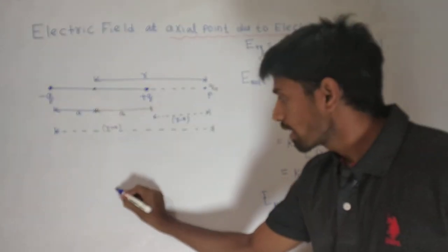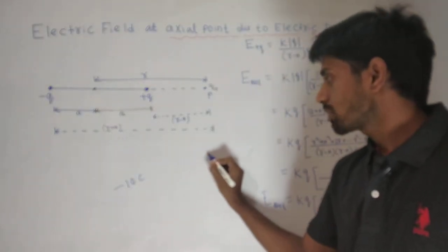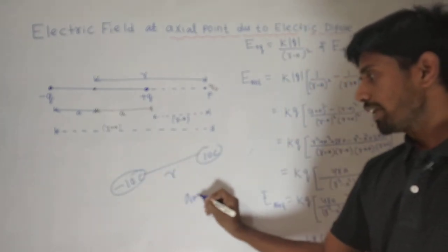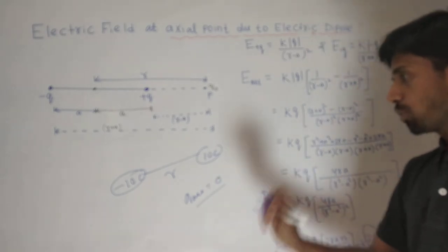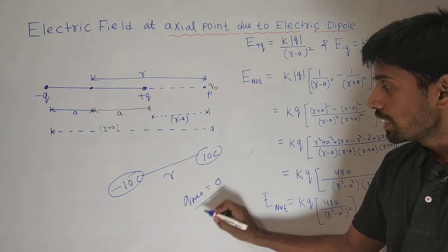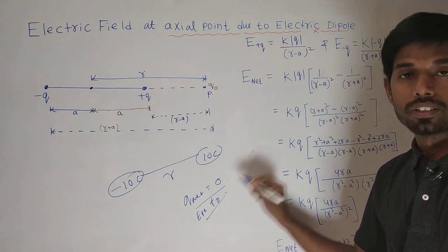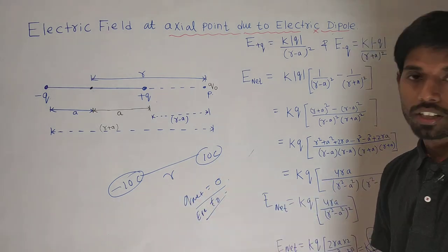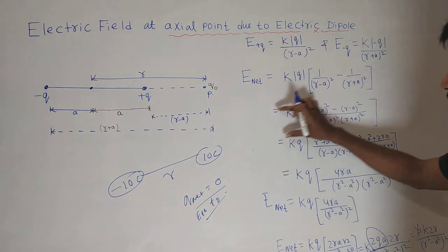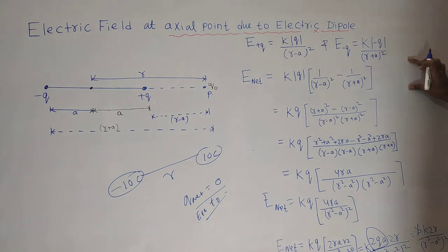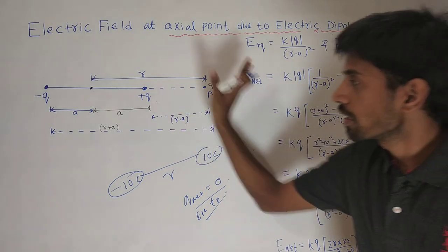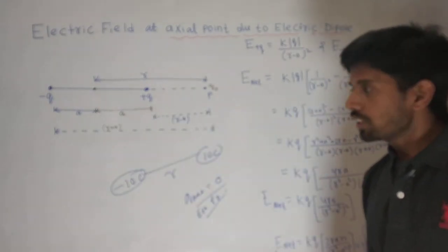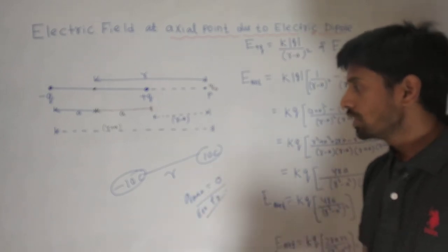Now, instead of a single point charge, suppose we had a set of minus 10Q charge and plus 10Q charge. What is the net charge? Net charge is zero. But this is very very important — net charge is zero but net electric field is not zero. At very large distances we can say net electric field is approximately zero, but anywhere around this system of charge, net electric field is not zero.